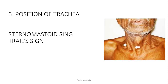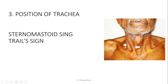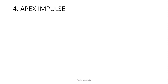Third finding is position of trachea. See here — the clavicular head of the sternomastoid is prominent. This is called the sternomastoid sign or tail sign — by only inspecting the patient, if you see prominence of the clavicular head of sternomastoid, it indicates the trachea is pulled to that side because of lung collapse or fibrosis on that side. If there is opposite-side massive pneumothorax, hemothorax, or massive pleural effusion, the trachea is also shifted to the opposite side.